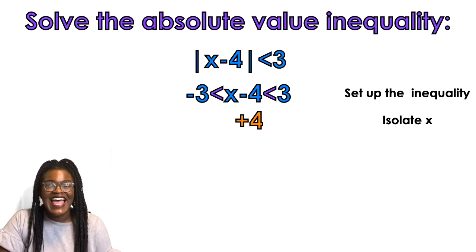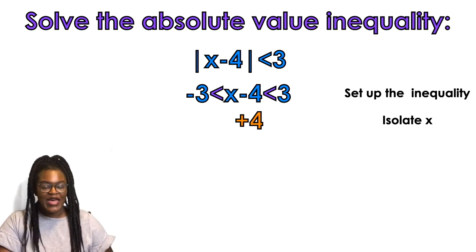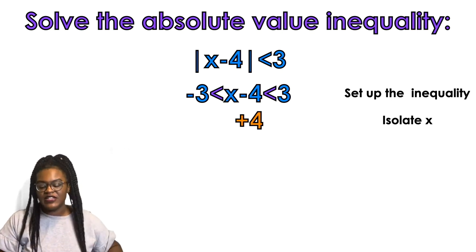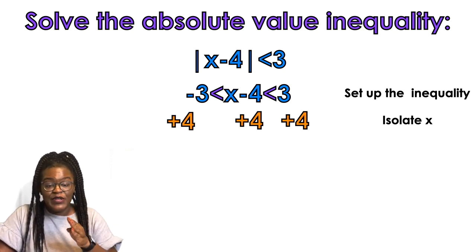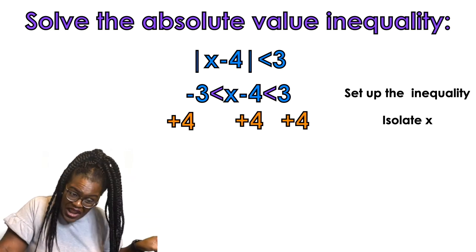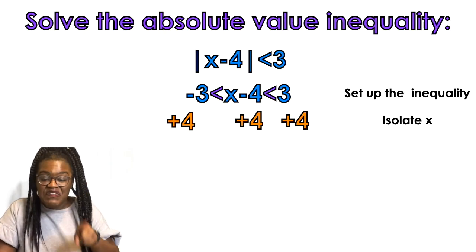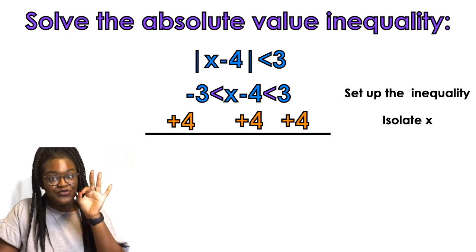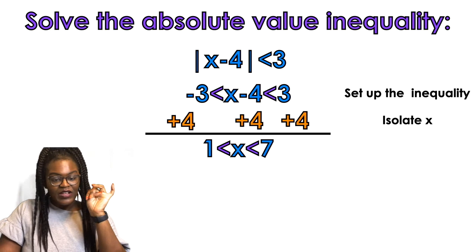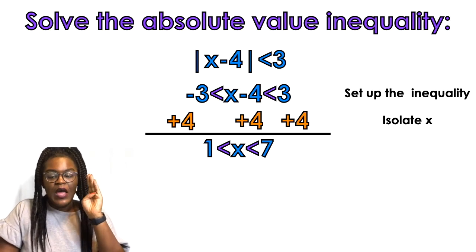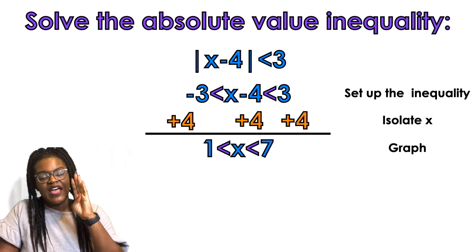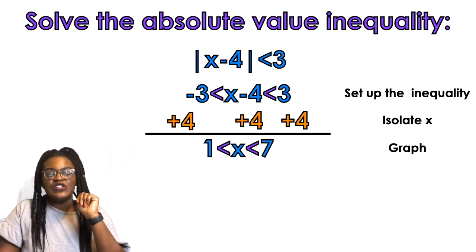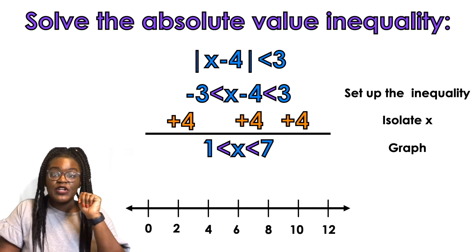We're going to isolate x, so I need to get x by itself. There's a minus four next to x, so I'm going to add four to cancel out that four in the middle, add four to the three, and add four to the negative three. Once I do that and simplify: negative three plus four is one, the negative four and positive four cancel out leaving x alone, and three plus four is seven.